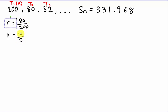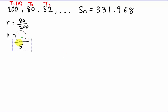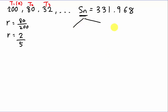So we know R is equal to 2 over 5. Something very important in geometric progression is you must be careful when you want to find Sn, because in geometric progression, Sn actually has two formulas.